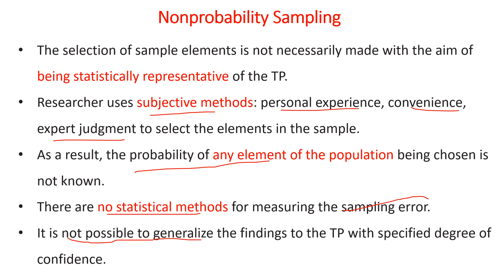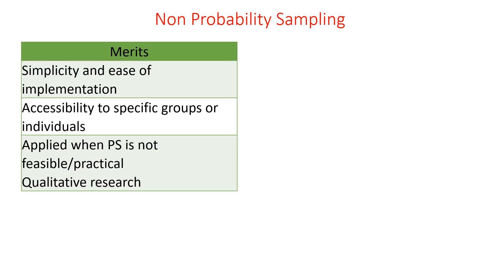Coming to the merits of non-probability sampling, there are important advantages. The first one is its simplicity and ease of implementation. In the case of probability sampling, it is somewhat difficult to conduct because it requires a large amount of sample for representativeness, making it very challenging. Whereas non-probability sampling offers simplicity and ease of implementation as one advantage.